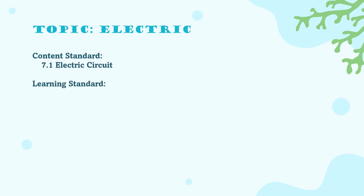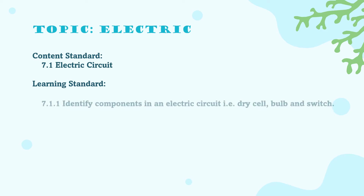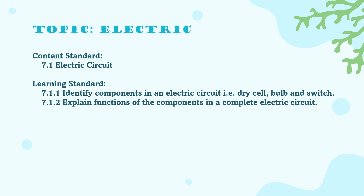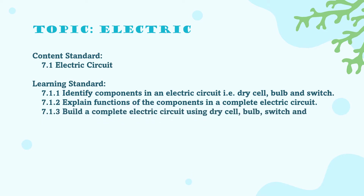Our learning standards for today are: 7.1.1 identify components in an electric circuit — that is dry cell, bulb, and switch; and 7.1.2 explain the function of the components in a complete electric circuit.